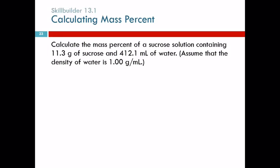Mass percent - we need to know what is mass percent. Mass percent is the grams of solute. What's our solute here? What's dissolved in the water? Sucrose. So grams of sucrose divided by grams of the whole solution. The whole solution is grams of sucrose plus grams of water, and then I'm going to multiply by 100 to get a percentage.